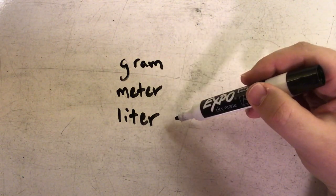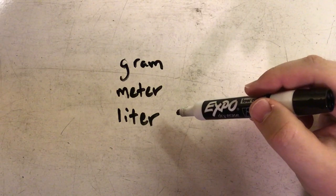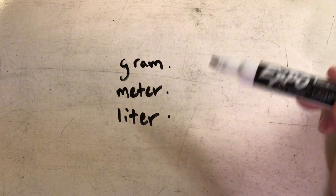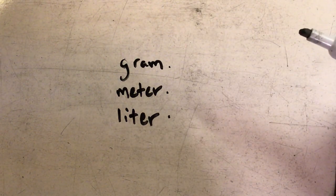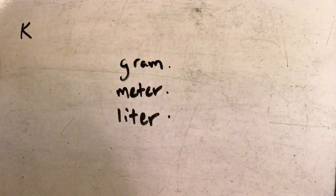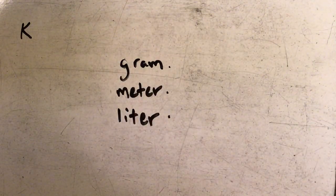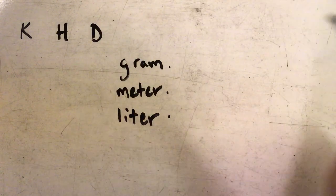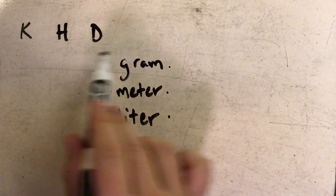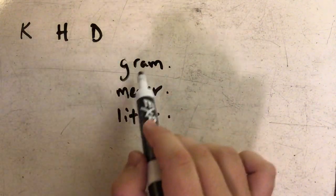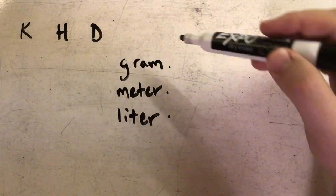In addition to these basic units, we have larger and smaller units that have the same root word but different prefixes. Let's start with the larger of those units. We have a K for kilo, as in kilogram or kilometer, we have an H for hecto, and we have a D for deca. All of these units would be larger than any of these units, so one kilogram would be larger than one gram.